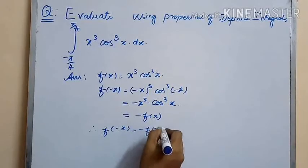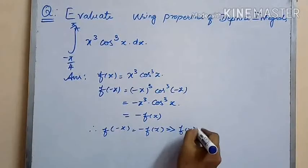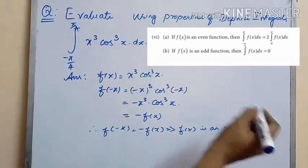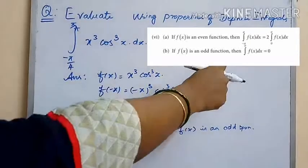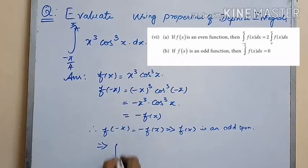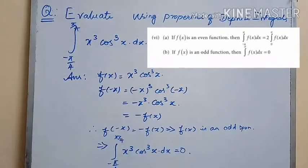We know the property that if f(−x) is equal to minus f(x), then f(x) is an odd function. Therefore, by the property given above, the integral from minus a to a of f(x) dx equals zero if f(x) is an odd function. Therefore, the integral from minus π/4 to π/4 of x³ cos³(x) dx is equal to zero.